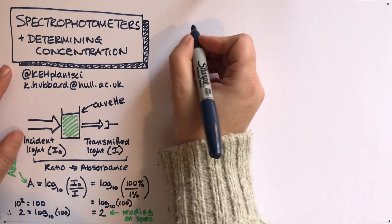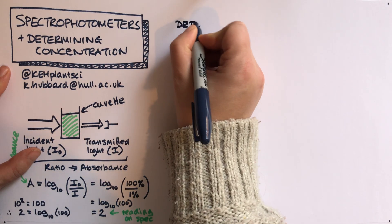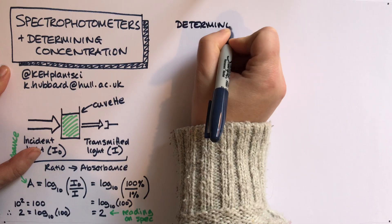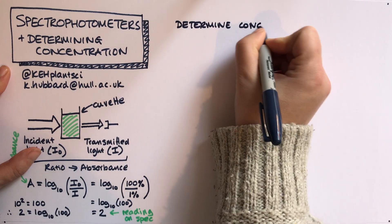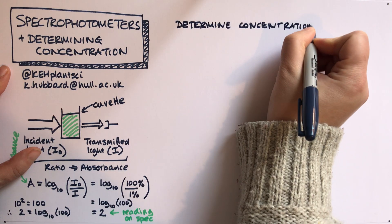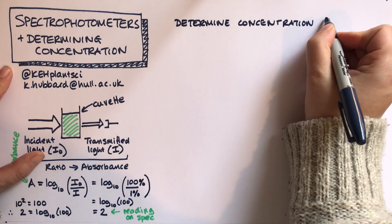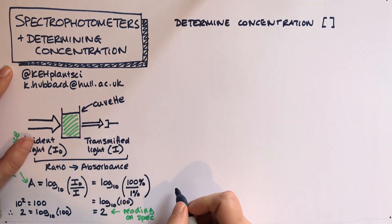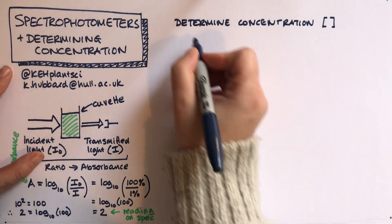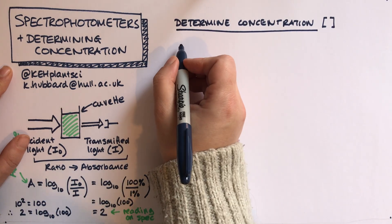So that's how the spectrophotometer works. We now need to think about determining the concentration of a molecule. Concentration is usually given in square brackets as a notation.